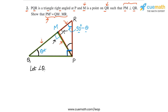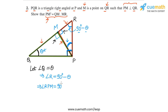Let angle Q = θ. Then angle R = 90° − θ. Now in triangle RPM, the angle at M is 90°, so angle RPM = 90° − angle R = 90° − (90° − θ) = θ. So the angle at P inside triangle RMP is also θ, meaning angle PQM equals angle RPM.